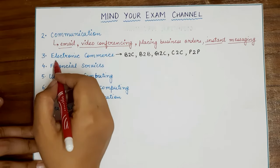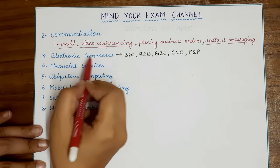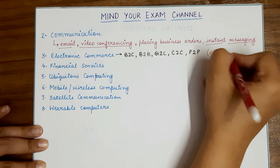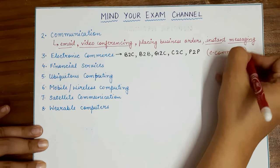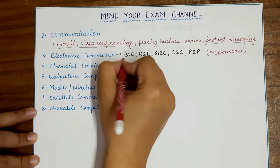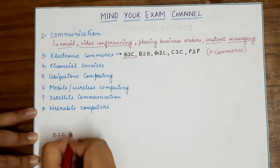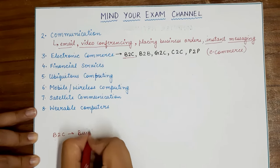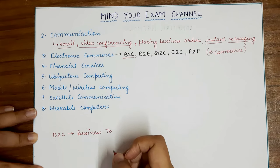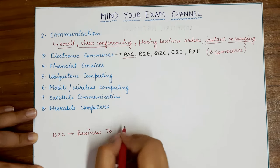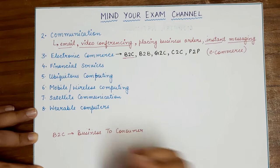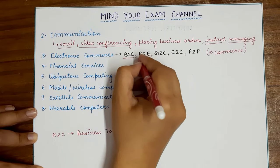The third use of computer networks comes in the form of electronic commerce, which we also know as e-commerce. E-commerce can take multiple forms. Starting with B2C — business to consumer — the most common examples are Amazon, Flipkart, Myntra, or Nykaa. They are a business providing services directly to the consumer. The next form of e-commerce is B2B, which means business to business.